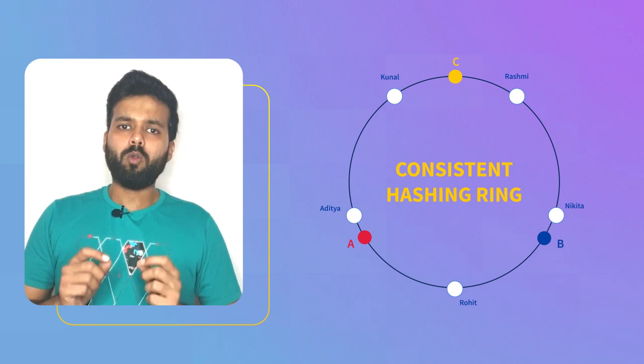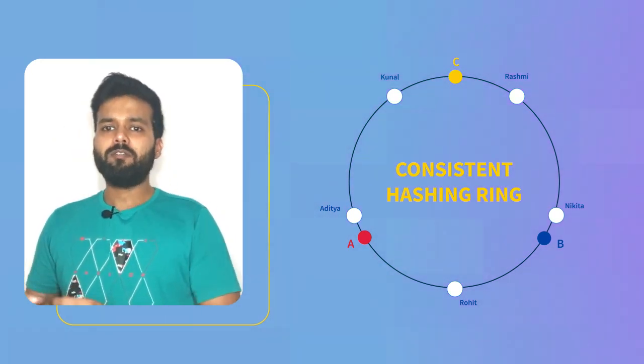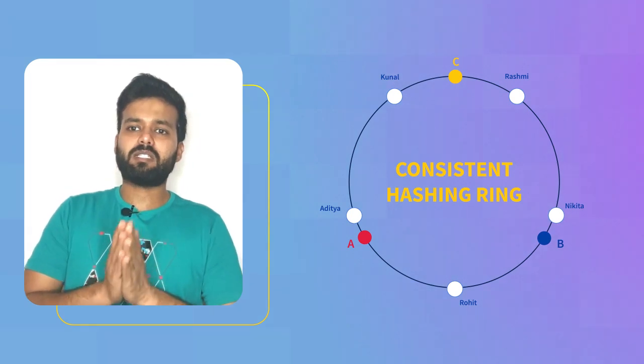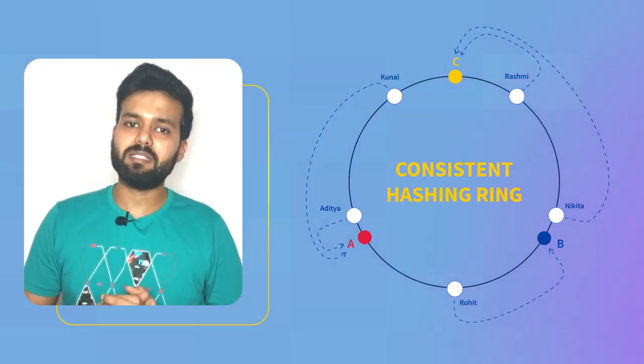The HC hash function can be used to mark partition key or the client ID on the same consistent hashing ring. Now to find out on which server a given key needs to be routed, we need to locate the key on the circle and then move in the counter clockwise direction to find the server.